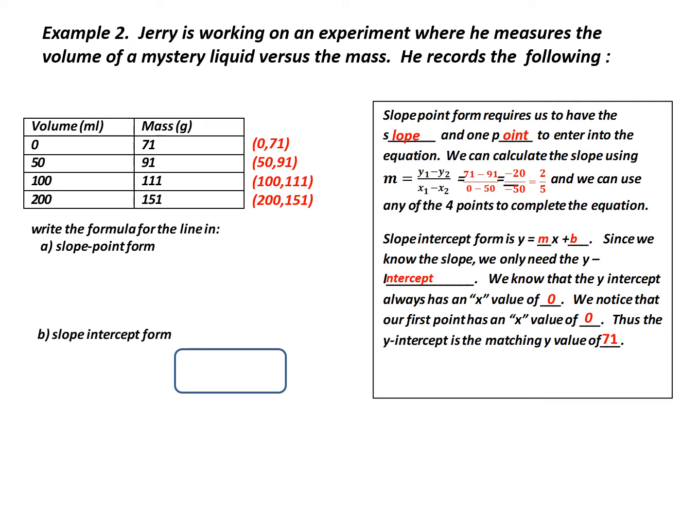So I write out my slope point formula, where I've inputted 2/5 in for m. Now, I need to fill in the values for one point. Notice, I've got four points. So there could be four different answers for this equation. I've decided I'm going to work with the second point. I'm going to input 91 for y₂ and 50 for x₂. Now, you can use any one of these four points, but the values have to come from the same point. So that's my answer, although you could have gotten three other answers.